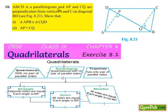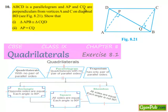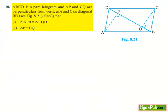Moving on to the 10th question: ABCD is a parallelogram and AP and CQ are perpendiculars from vertices A and C on diagonal BD. Show that